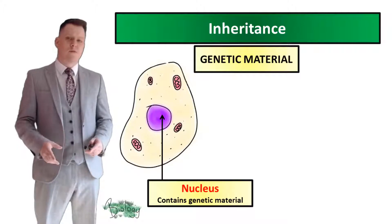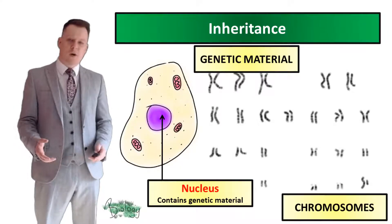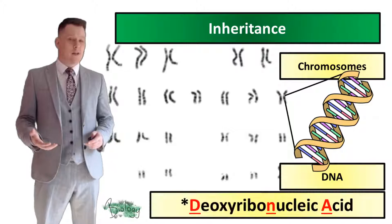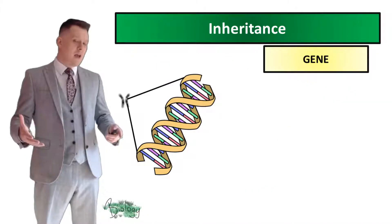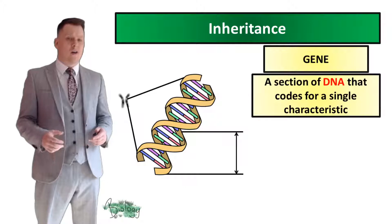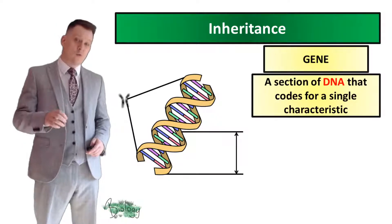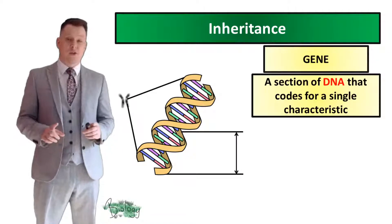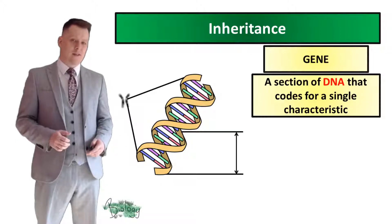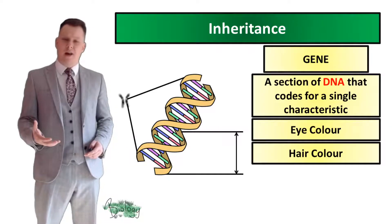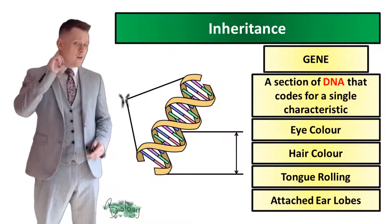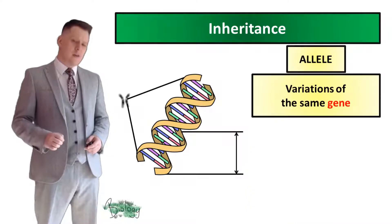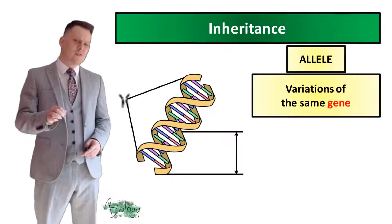This genetic material takes the form of 23 pairs of chromosomes, and all of these chromosomes are made up of DNA, which stands for deoxyribonucleic acid. Contained within these strands of DNA are sections which code for single characteristics called genes. This brings us to another keyword: the allele, and these are variations of the same gene.